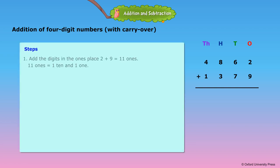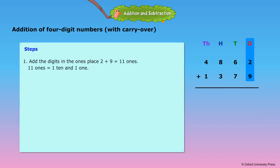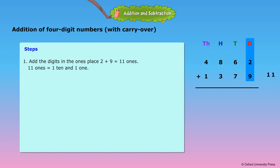Step 1: Add the digits in the 1's place. 2 plus 9 is equal to 11. 11 ones equals 1 ten and 1 one. The 1 in the 1's place goes under the 1's column, and the 1 ten goes over 6 in the tens place as carryover.